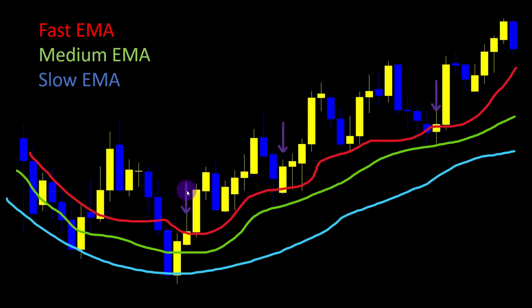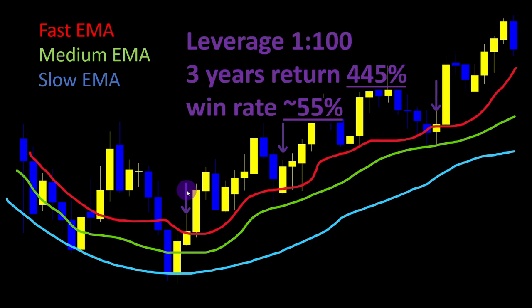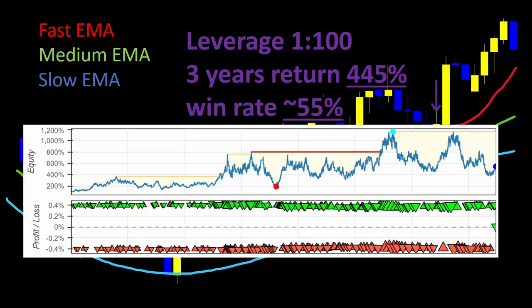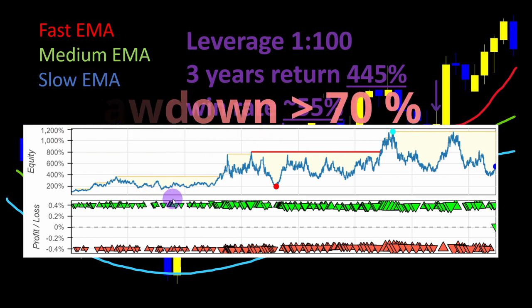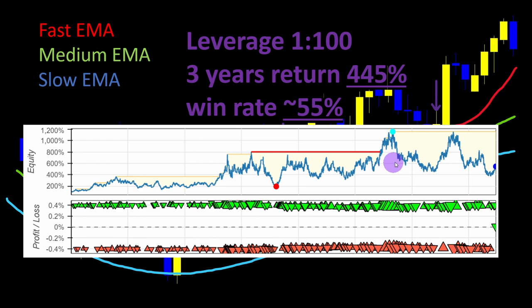We already tested this strategy in a previous video and optimized our parameters. The best results using a leveraged account of 1:100 and testing over three years of data gave a return percentage of 445% and a win rate of 55%. However, investigating the equity curve showed this strategy is quite risky — it has large drawdown periods and no stable positive climb over the three years of data.